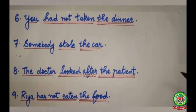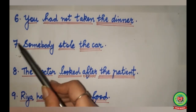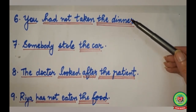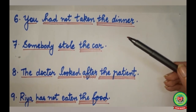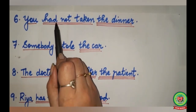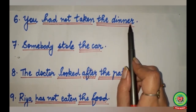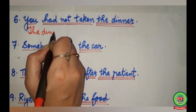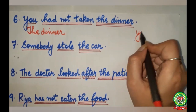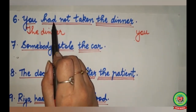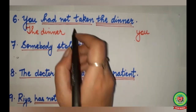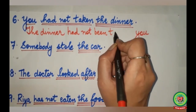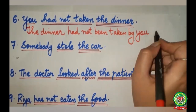Now these examples are related to miscellaneous rules. First example: You had not taken the dinner. This sentence is given in the negative form in active voice, so in passive voice it will also remain negative. You is the subject, had not taken is the verb, the dinner is the object. The dinner will come in the beginning, you will go to the last. After had we add been. The sentence becomes: The dinner had not been taken by you.